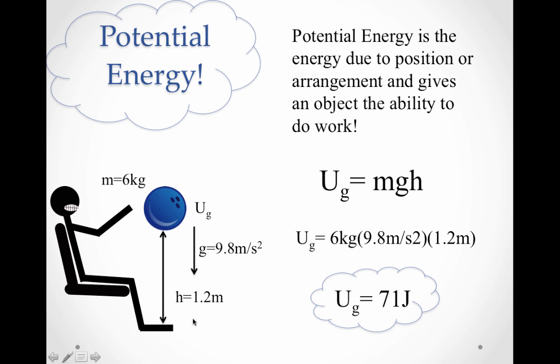So our example of how we would use potential energy in an equation here is potential energy due to gravity U sub G is equal to mgh. So the mass of the bowling ball, which is 6 kilograms, we multiply that by the acceleration due to gravity and then also by the height that it's raised in this gravitational field. And when we multiply all those things together, we end up with a potential energy of 71 joules.